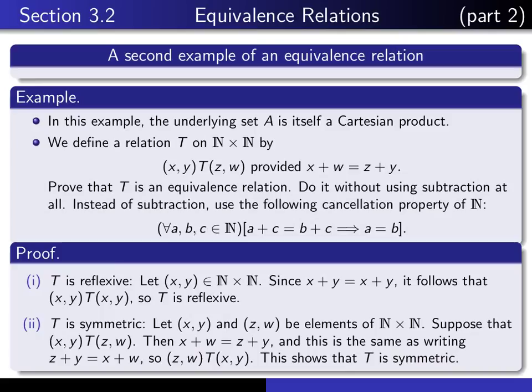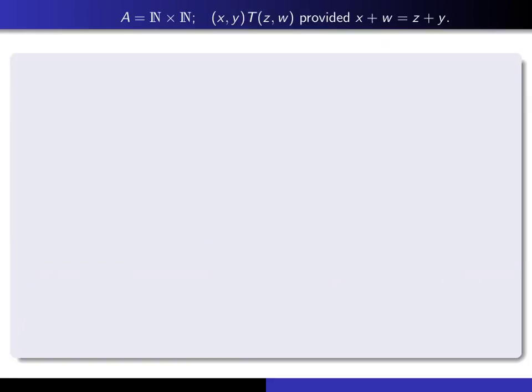The last step is to prove that T is transitive. Here I'm reminding you of the basic information: this is the underlying set, this is the definition of T. I want you to prove that this relation is transitive. Put your video on pause and see if you can write that proof.